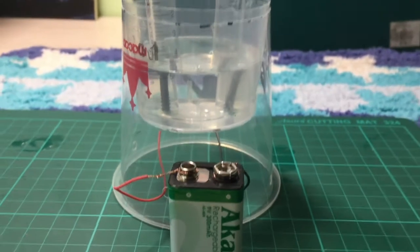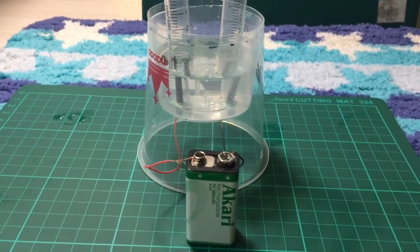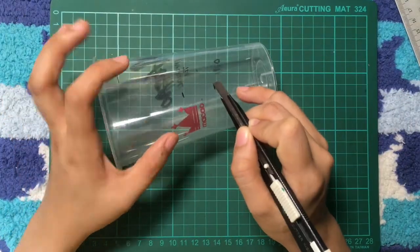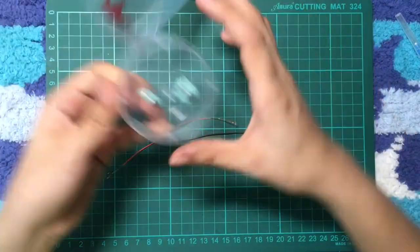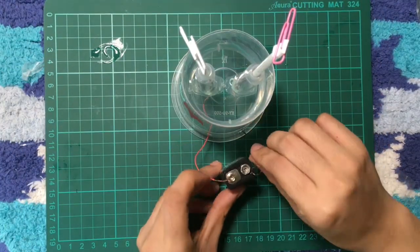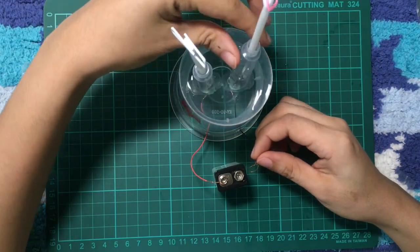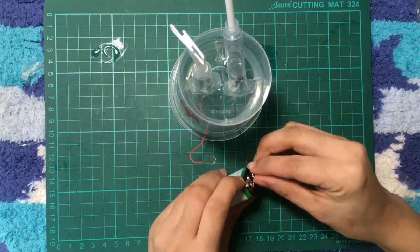This is our improvised electrolysis apparatus. I built it using a milky plastic cup, some wires, screws, syringe, and a 9 volt battery, which is where the electricity will be coming from.